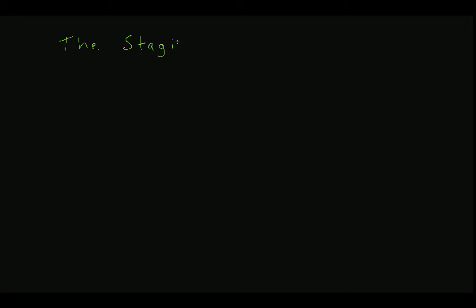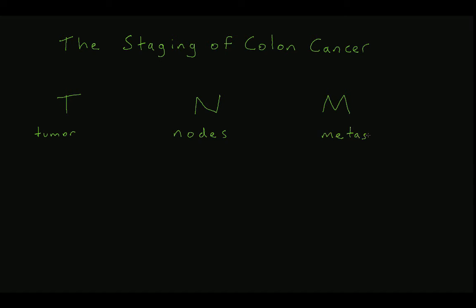Typically, once a histologic diagnosis of cancer has been established, the cancer must be staged. Staging serves to stratify patients by prognosis based on the extent of their disease, which in turn helps the treating physician determine the type and extent of treatment offered. As with many other cancers, the most common staging system used for colon cancer is the TNM system. T stands for tumor and describes the depth of invasion of the cancer within the bowel wall. N stands for node, as in lymph nodes, and describes the presence and extent to which the cancer has spread to the local draining lymph nodes. M stands for metastasis and describes the presence and extent of distant spread of the cancer to other organs or sites. The combination of TNM for a particular patient determines their stage of disease. Tables describing the specific criteria used to determine TNM status and stage can easily be found online.